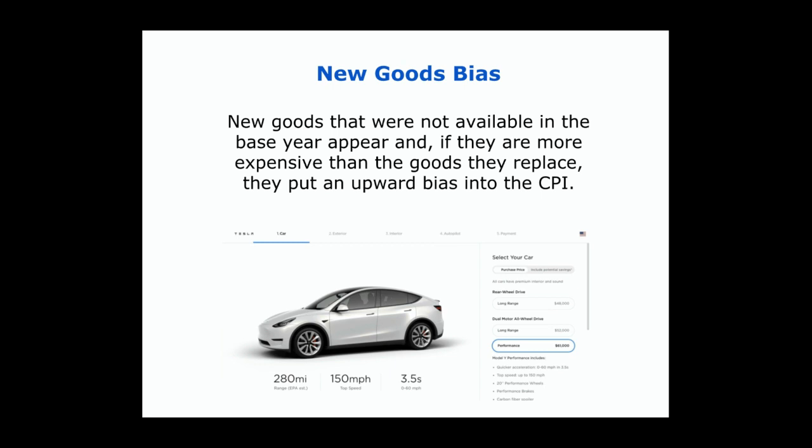There's something called the new goods bias. Some goods were not available in the base year but now appear in the current year — for example, electric cars, which certainly didn't exist in an earlier base period. These new goods may be more expensive than the products they're replacing, so it seems like the price of cars has gone up. But really, what we're calling a car is a completely different thing in the current period versus the base period, putting upward pressure on the CPI.